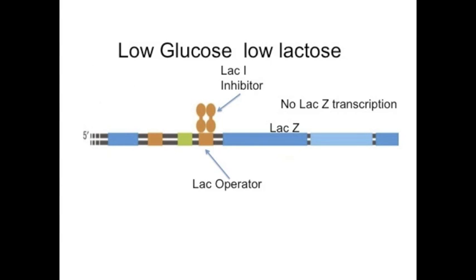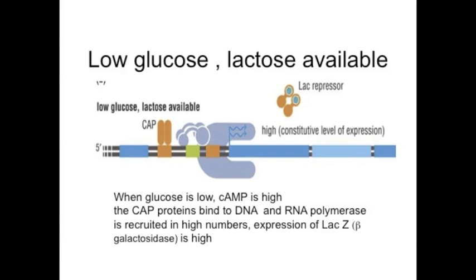When we have both low glucose and low lactose levels, the lacI inhibitor is inhibiting the expression of lacZ, and therefore we have no beta-galactosidase expression. On the other hand, when we have low glucose and lactose is available, the lac repressor will be removed from the DNA because it is binding to lactose, and the CAP protein will be binding, recruiting RNA polymerase.